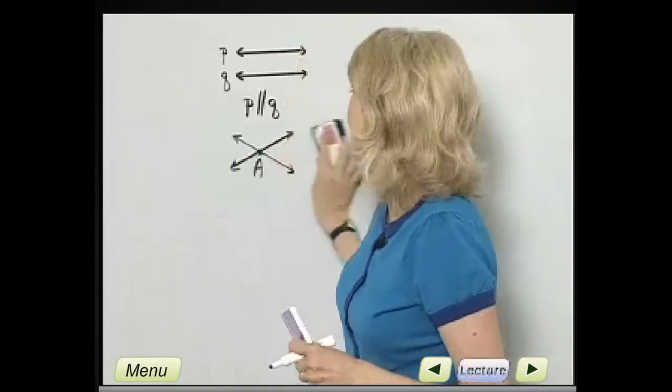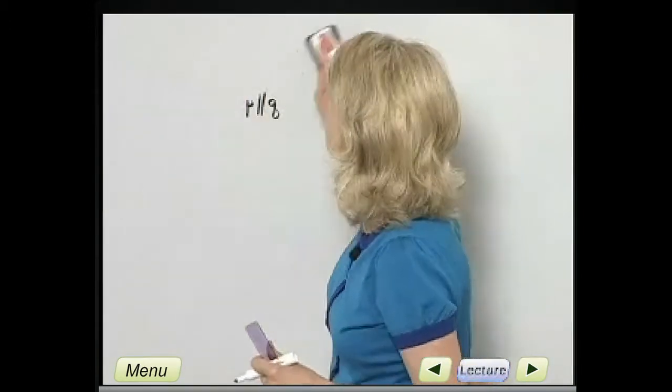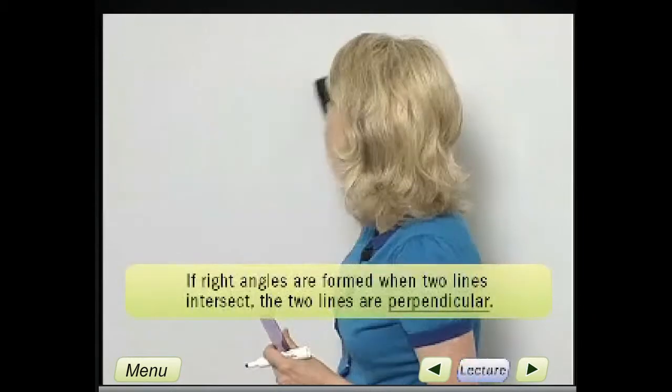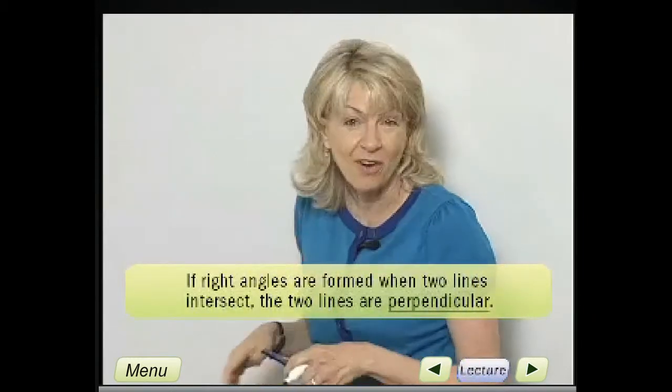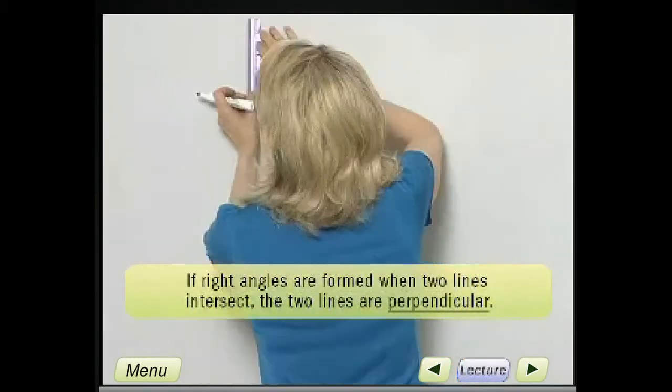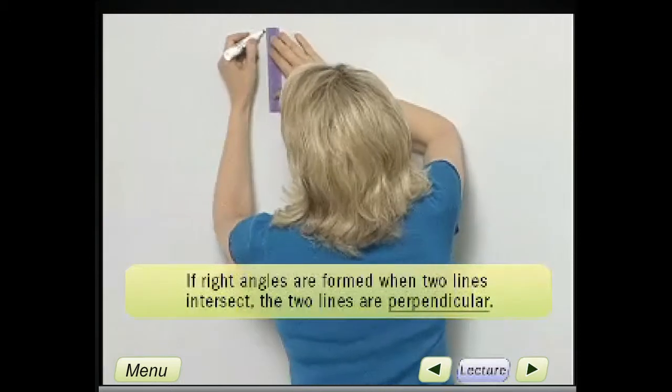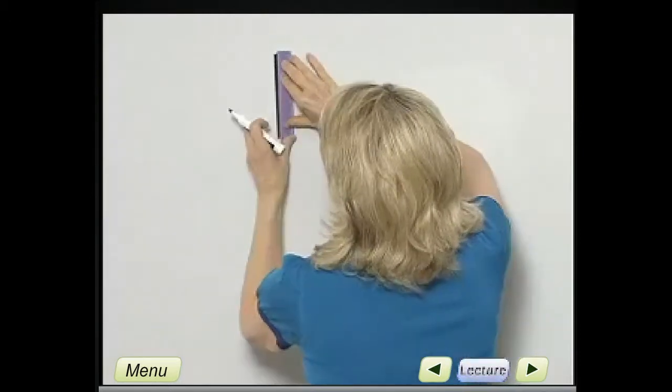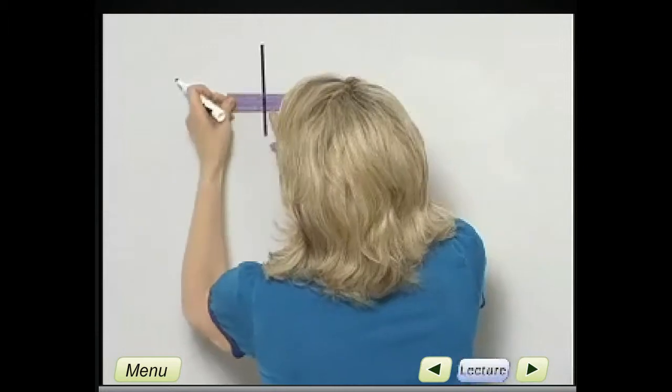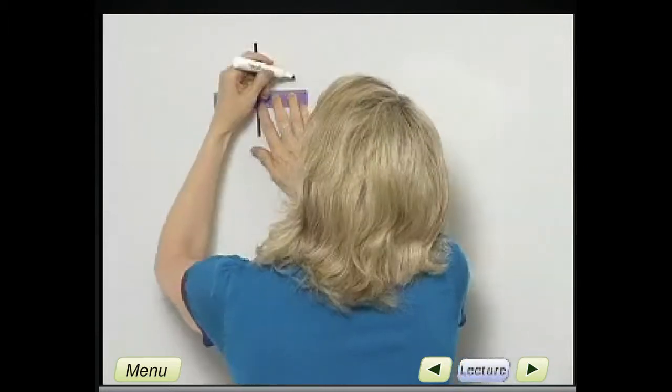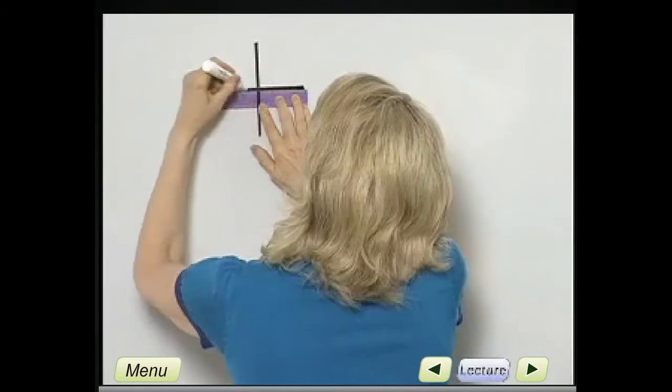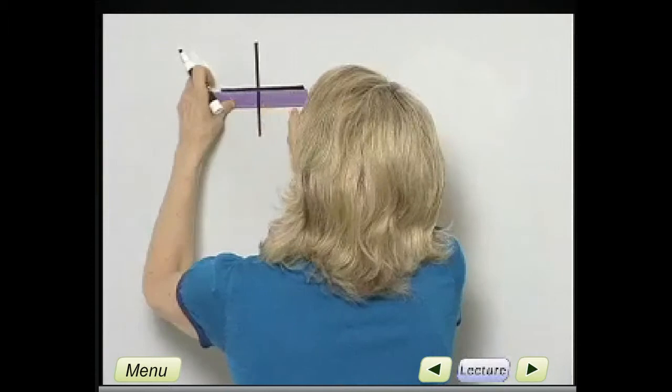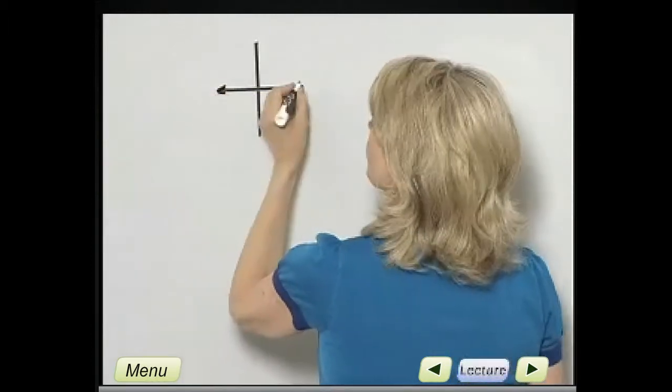Now let's look at an example of two lines that intersect, just like the previous example, but right angles are formed. And we call those perpendicular lines. Now, this is simply a sketch of perpendicular lines. There we go. So I'm estimating right angles.